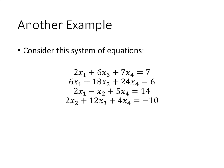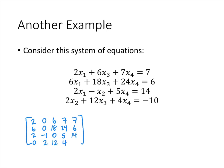Let's consider another system of equations. We write the augmented matrix: four equations give four rows, and four variables plus the right-hand side give five columns. In the first equation: 2x1, 0x2, 6x3, 7x4 equals 7. Second equation: 6x1, 0x2, 18x3, 24x4 equals 6. Third equation: 2x1, negative 1x2, 0x3, 5x4 equals 14. Fourth equation: 0x1, 2x2, 12x3, 4x4 equals negative 10. The next step is to row-reduce this matrix.